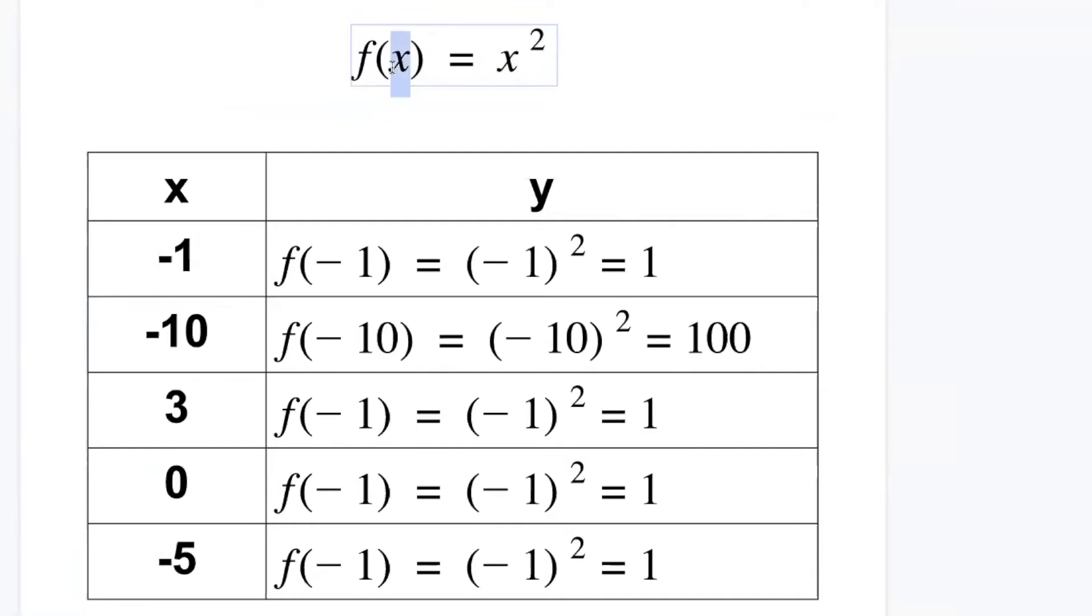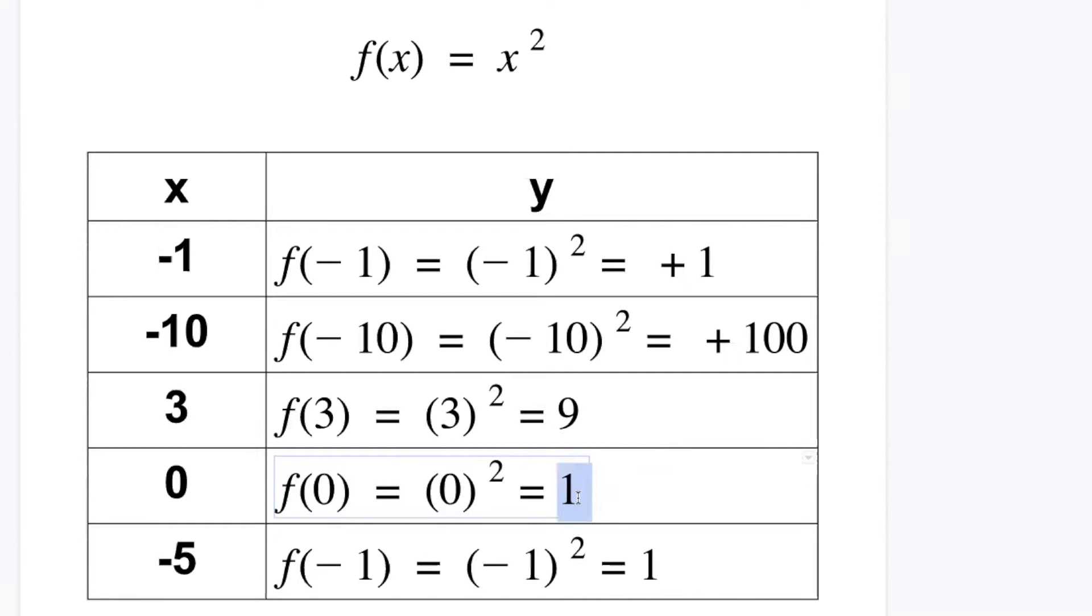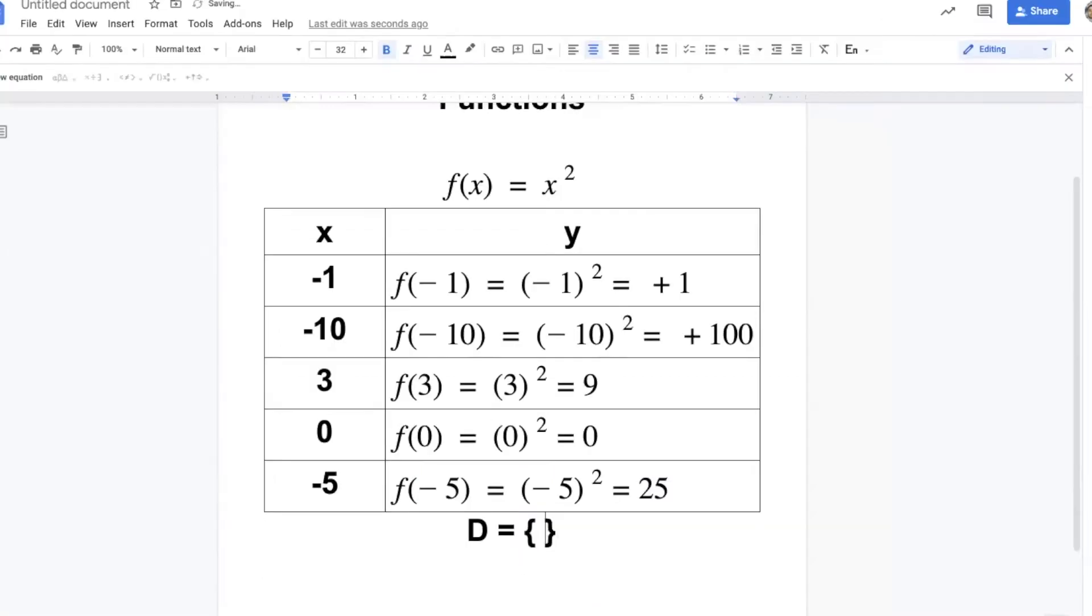You go to the function here, remove x and put the value. Negative 10 power 2 is positive 100. What about 3? 3 power 2 is 9. What if 0? 0. And negative 5 is 25.